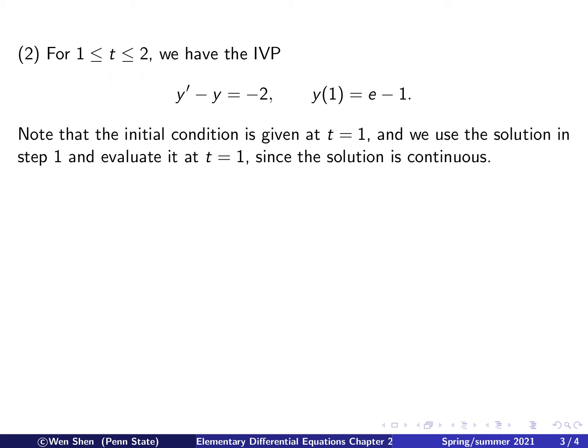So, we have the initial value problem. Here's the equation. Here's the value g, which is negative 2. And this will be the corresponding initial condition at t equals 1. Okay, so here I remark that this initial condition, t equals 1, is the beginning of this interval, which was the end of the interval of the previous solution.